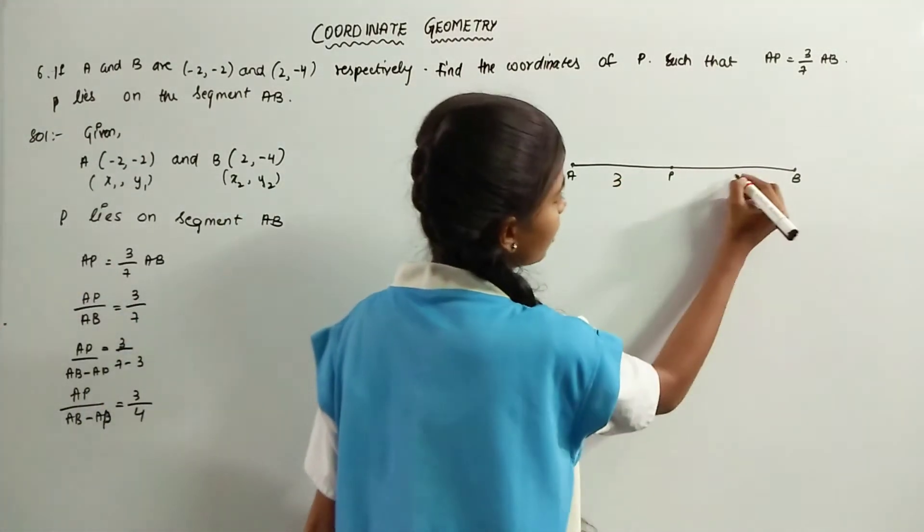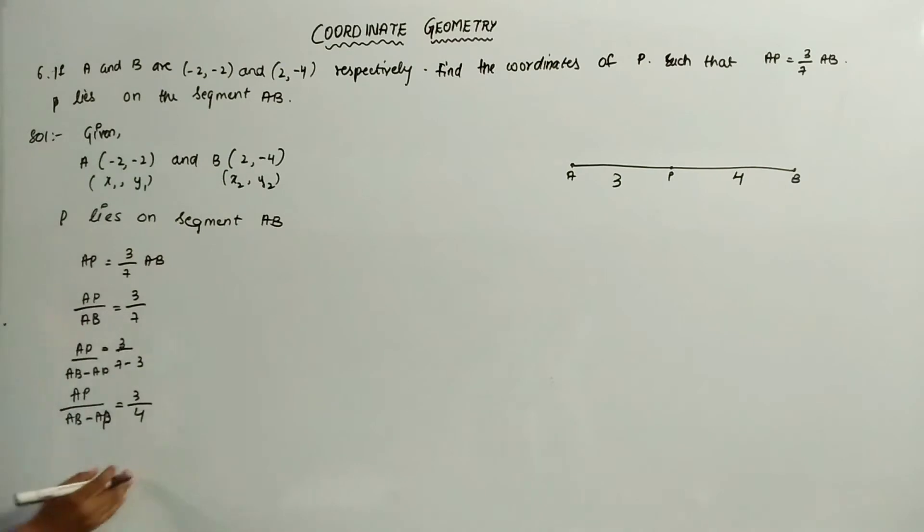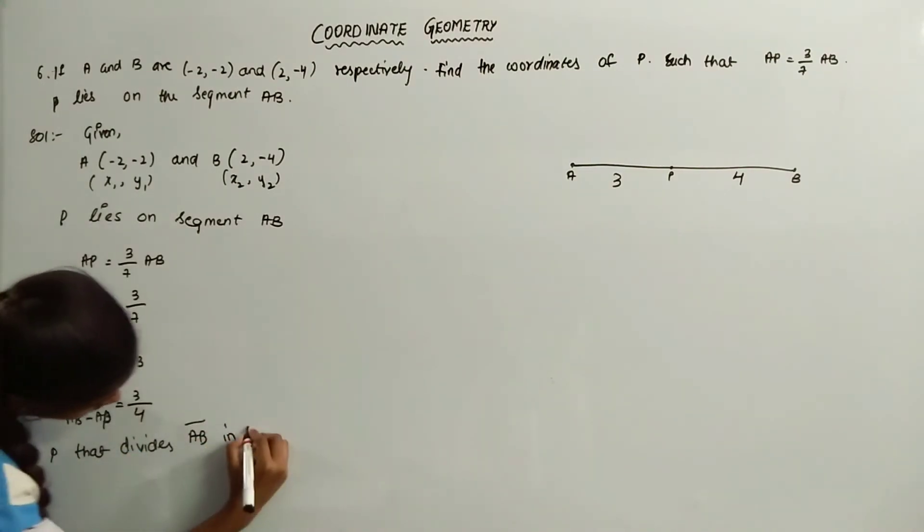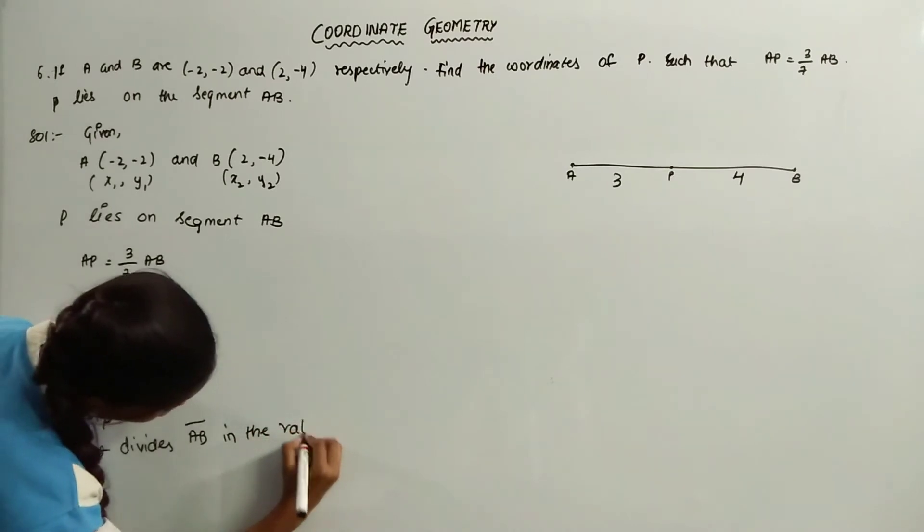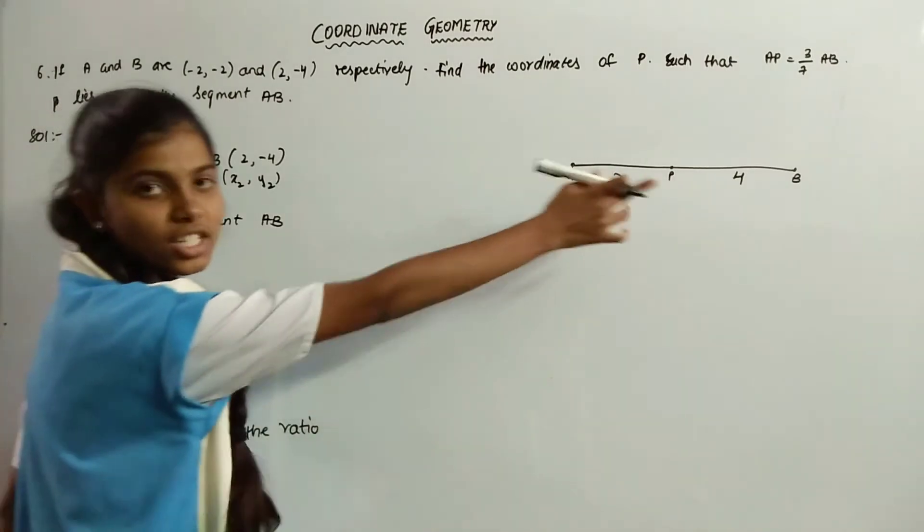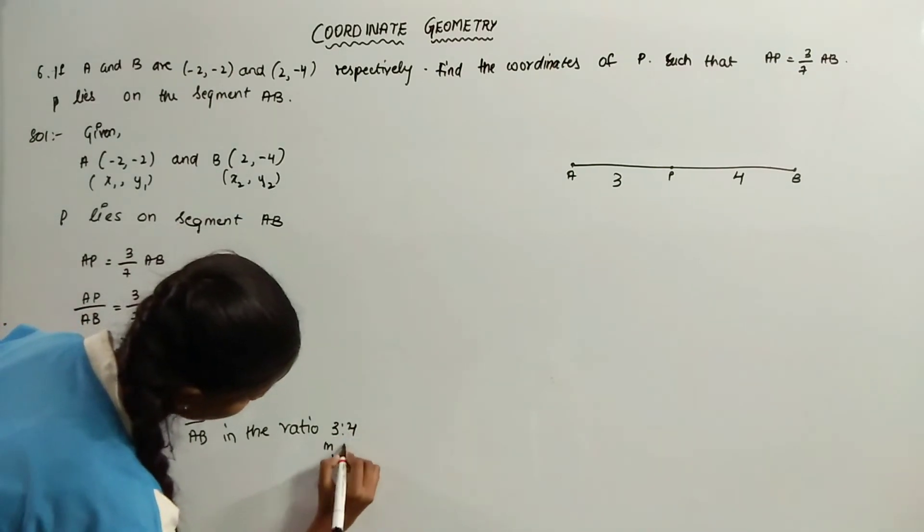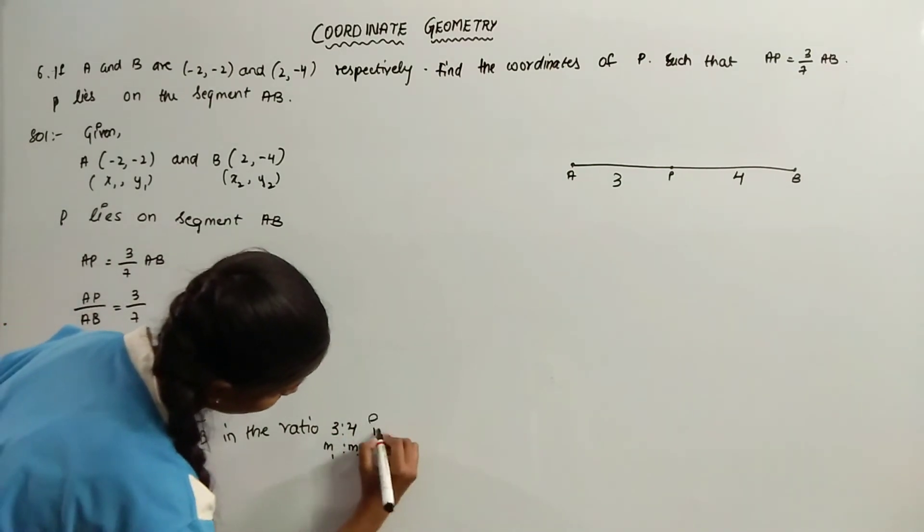Therefore, P is the coordinate that divides AB line segment in the ratio 3 is to 4. That is M1 is to M2 internally.